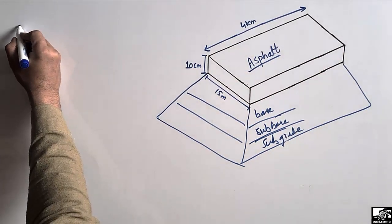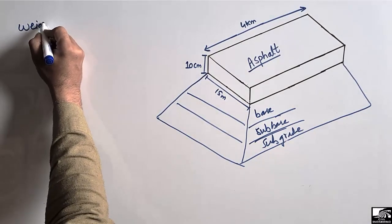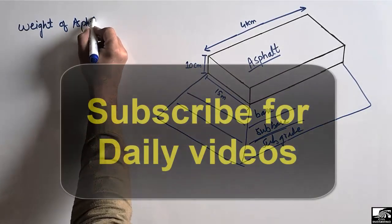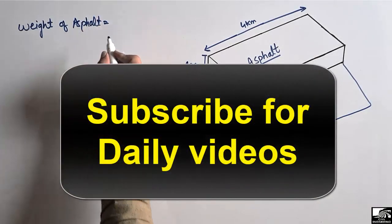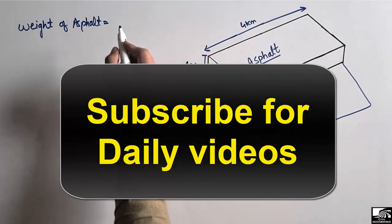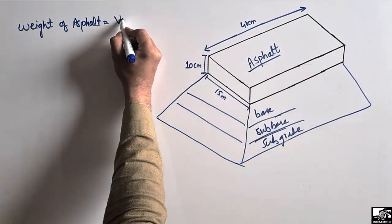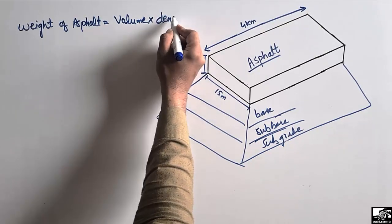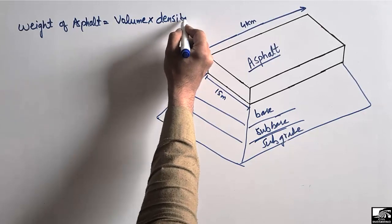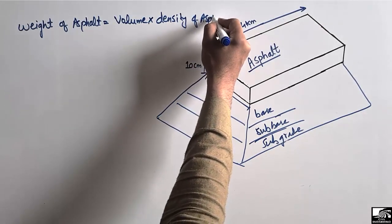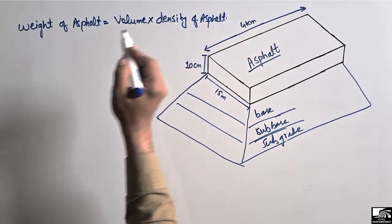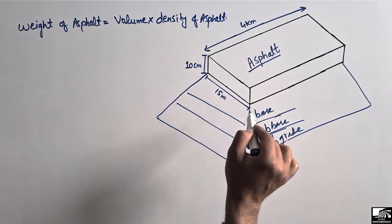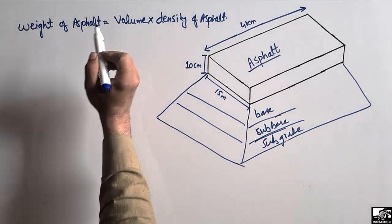The first step is to find out the weight of asphalt — that is, how much weight of asphalt has been used in this flexible pavement. The weight of asphalt is equal to the volume of asphalt multiplied by the density of asphalt. Using this formula, we can easily determine the weight of asphalt. We have two unknowns: volume of asphalt and density of asphalt.